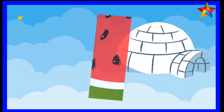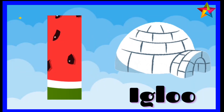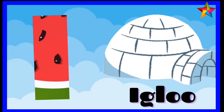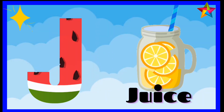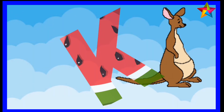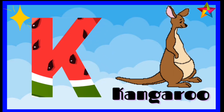I is for igloo, ig-ig-igloo. J is for juice, j-j-juice. K is for kangaroo, kangaroo.